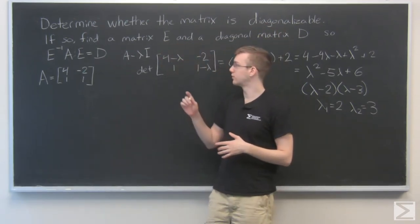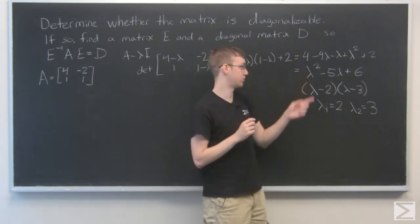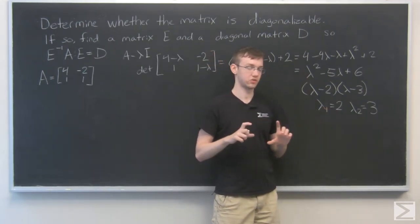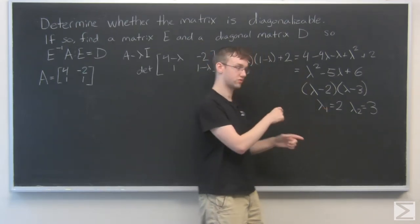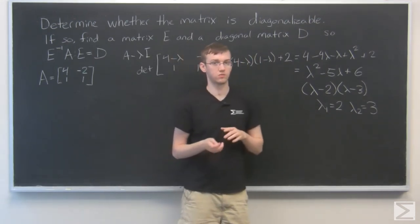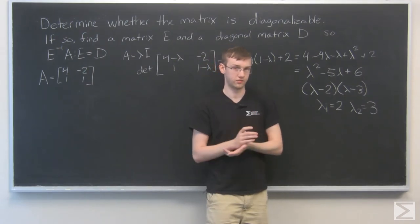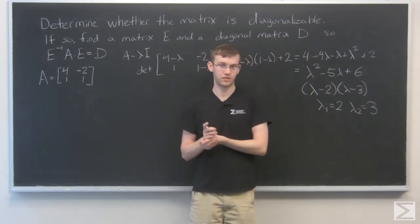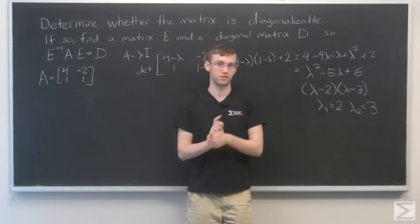So the way that we get the matrix D, if you remember, we just have a diagonal matrix where these are along the diagonal. So it would be 2, 0, 0, 3. And our matrix E we're going to get by using the eigenvectors. So let's find that first, and then we're going to write our final answer down at the bottom.